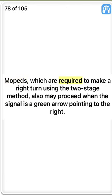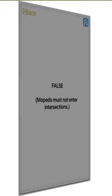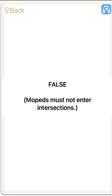Mopeds which are required to make a right turn using the two-stage method also may proceed when the signal is a green arrow pointing to the right. False. Mopeds must not enter intersections.